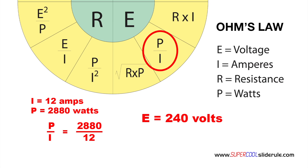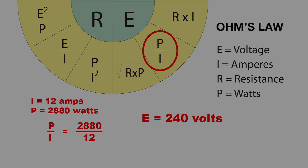So converting 12 amps and 2880 watts will give us 240 volts. This concludes our tutorial, but please stay tuned and let us introduce you to the super cool slide rule — the most useful tool in the HVAC industry, guaranteed to save you lots of money by saving you lots of time. Thanks for watching.